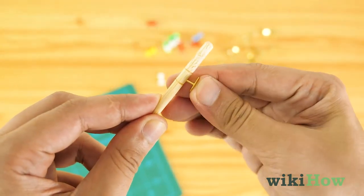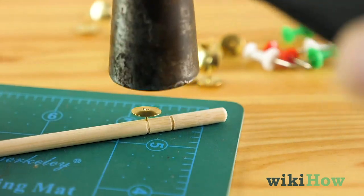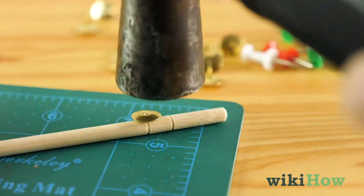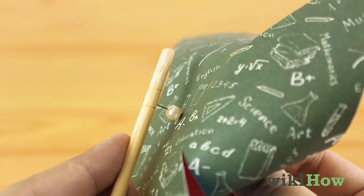Make a hole in the dowel by pressing a thumbtack into it and lightly hitting the tack with a hammer. Remove the tack and press the pinwheel into the dowel.